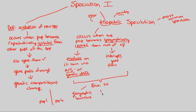Allopatric speciation can also be due to a migration event, specifically the migration of a small group of the population. Because you have migration of a small group, you have an isolated group, and thus the opportunity for genetic drift. Genetic drift means no gene flow, gene pools diverge, genetic compositions change — evolution will happen. Things are moving away from home — allopatric, other-country speciation.